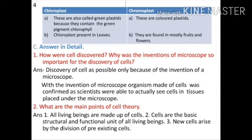Answer in detail. Question one: how were cells discovered and why was the invention of the microscope important? Answer: the discovery of cells was possible only because of the invention of the microscope. With it, scientists were able to actually see cells in tissues placed under the microscope, confirming that organisms are made of cells.